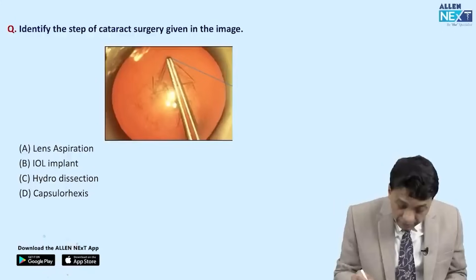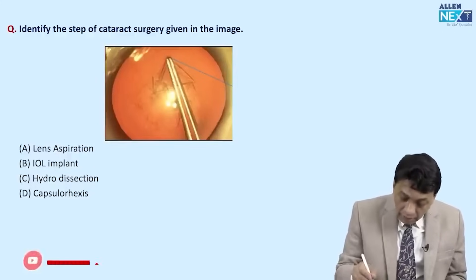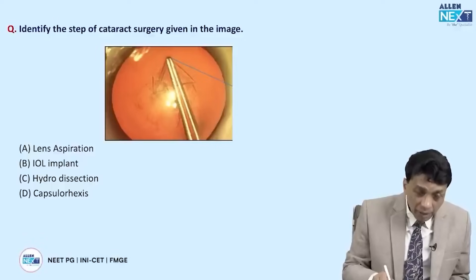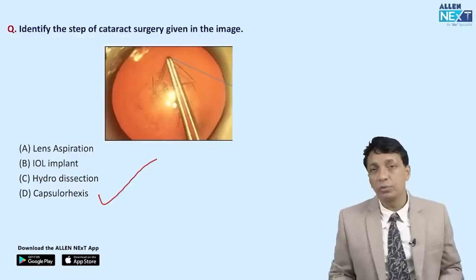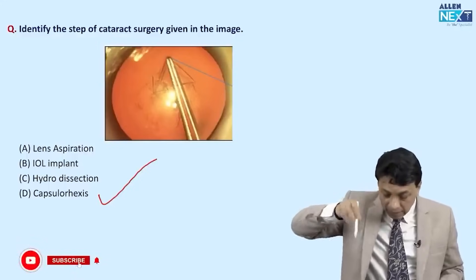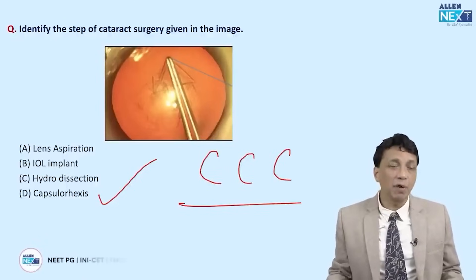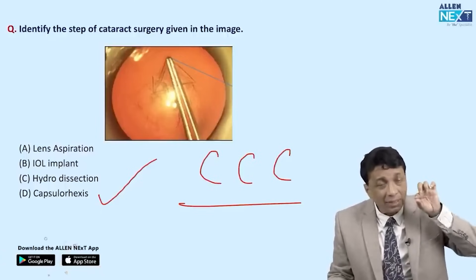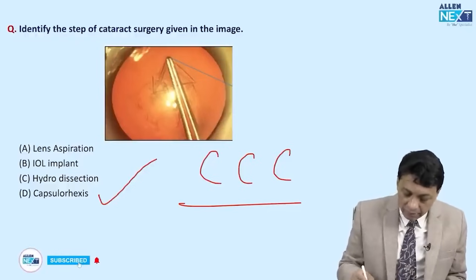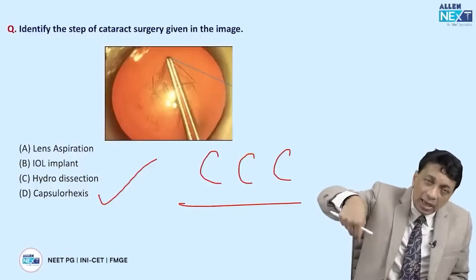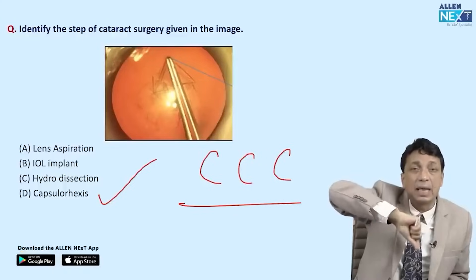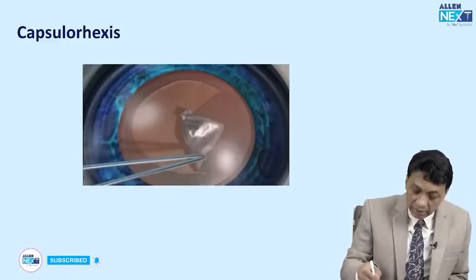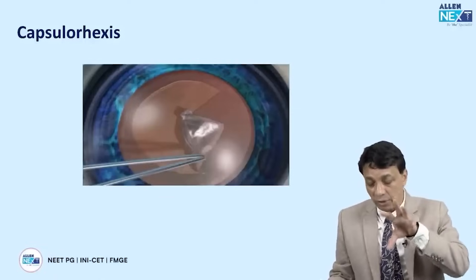A question asks you to identify the step of cataract surgery shown. Against the red glow, an envelope-shaped piece is being pulled — this is not IOL aspiration, IOL implantation, or hydrodissection. It is capsulorhexis: tearing the anterior capsule in a single fluid motion. This is called CCC — circular continuous capsulorhexis — the best method for opening the anterior capsule to remove the cataract and implant the IOL in the capsular bag.